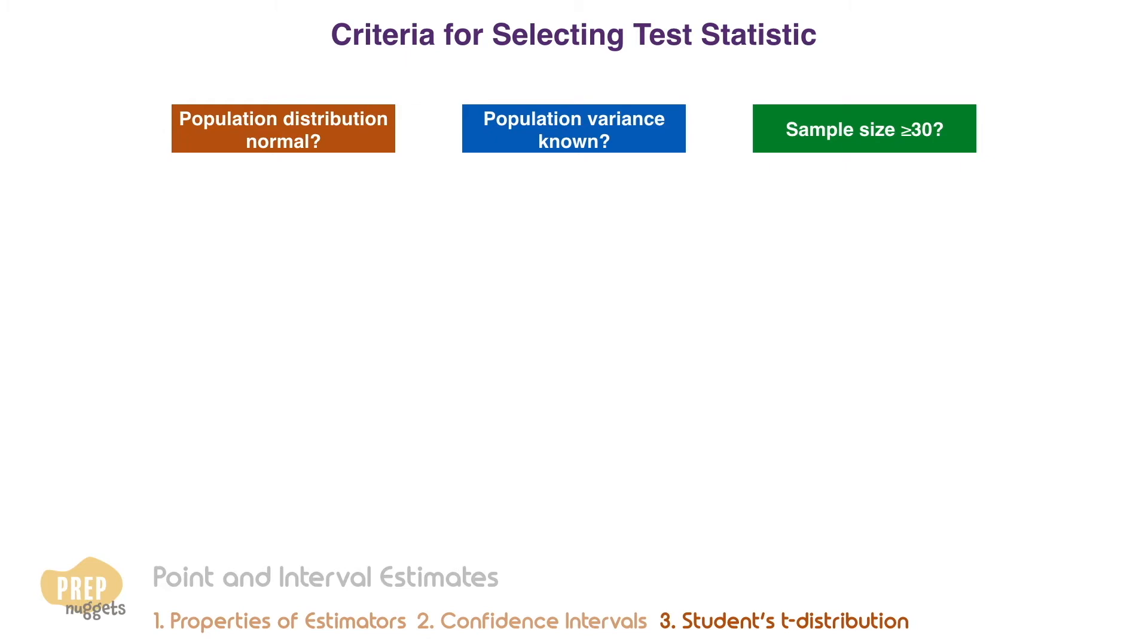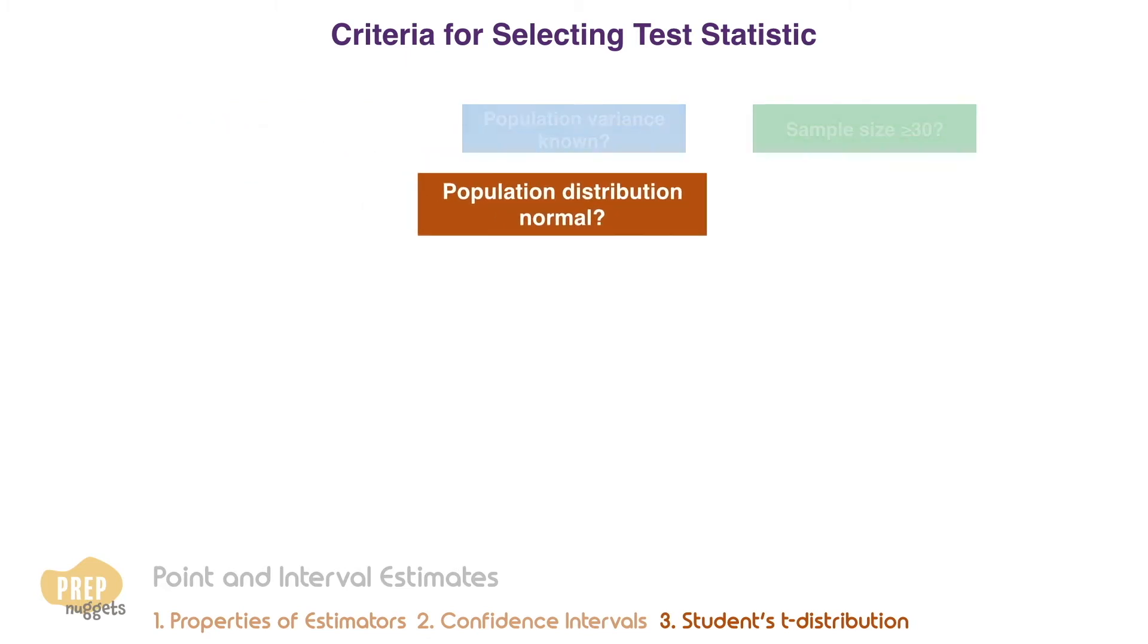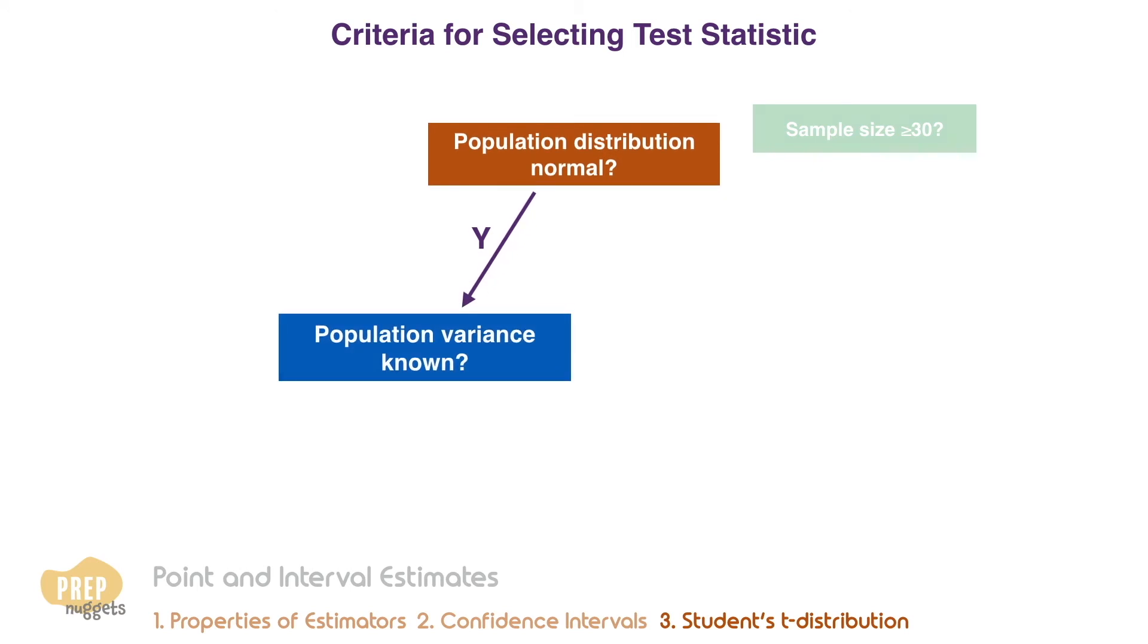First, ask yourself if the population is normal, or can it be assumed as normal. If it is, the sampling distribution can be assumed normal. All you need to know is whether the population variance is known. If it is, you can safely use the Z statistic. Otherwise, it's more conservative to use the T statistic.